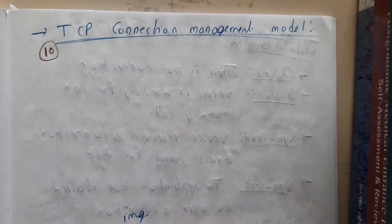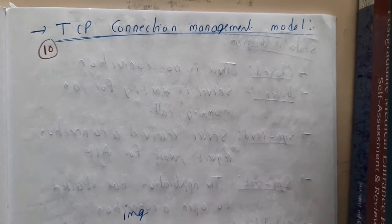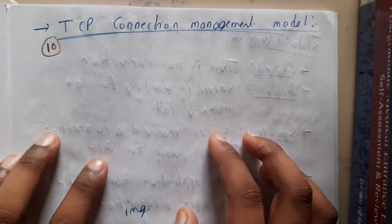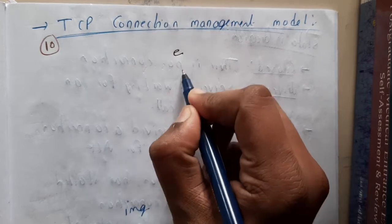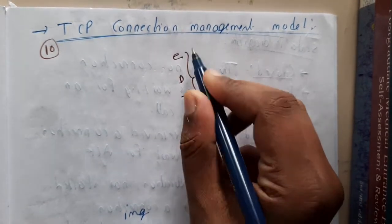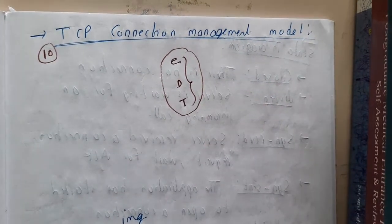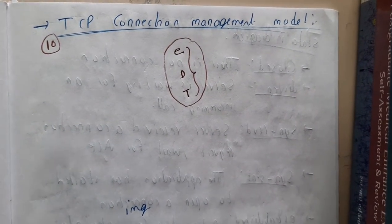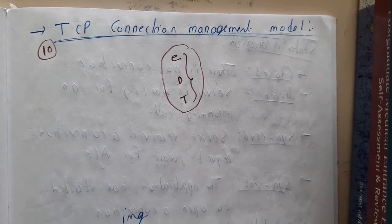Hello guys, we are back with our next lecture. In this lecture, let us go through the TCP connection management model. We discussed about connections — how establishment is done, how data transfer is done, how termination is done. There is a small management diagram that shows the flow, and that diagram will be discussed in this lecture, covering all three stages.